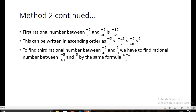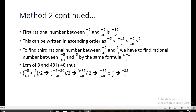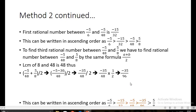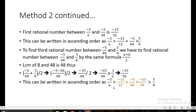For the third rational number, we apply the average formula between -5/48 and 5/8. The LCM of 48 and 8 is 48. Solving gives (-5 + 30) / 48 ... this reduces to -35/48 divided by 2, which is -35/96. In ascending order: -5/6, -15/32, -5/48, -35/96, 5/8. The three rational numbers between -5/6 and 5/8 are -15/32, -5/48, and -35/96. As you can see, Method two is very lengthy and takes many steps, so we should try to avoid it.